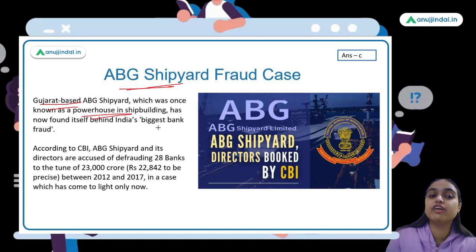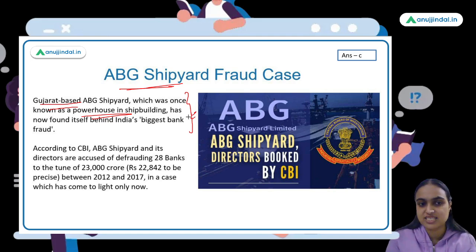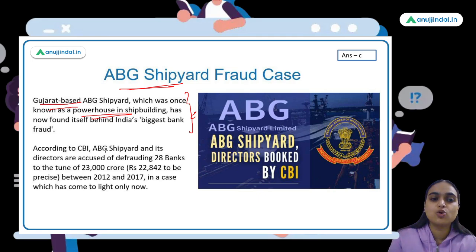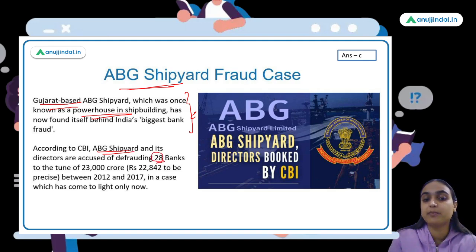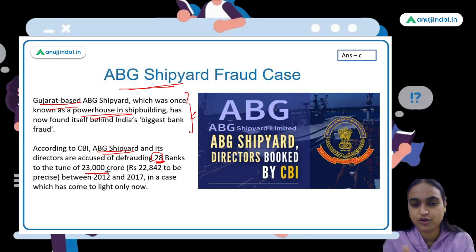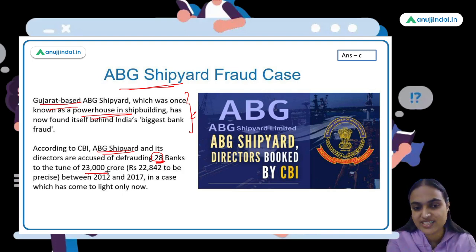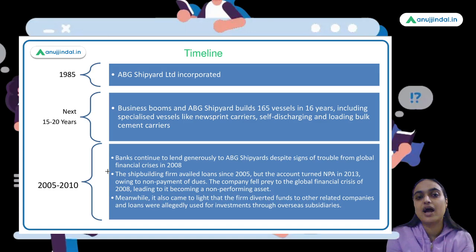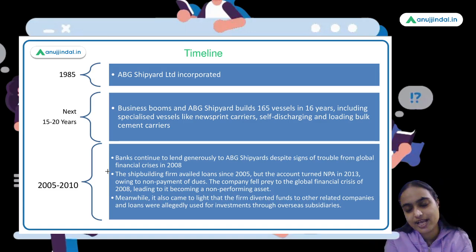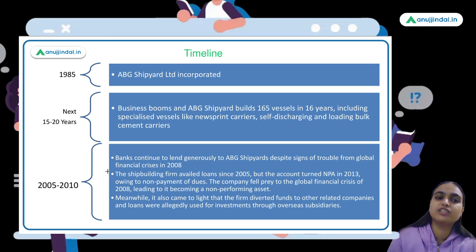The CBI has accused this firm of defrauding 28 banks for an amount of approximately 22,842 crores. This scandal occurred during the time period of 2012 to 2017 and has come to light now. Let's discuss the entire timeline of this company. The firm was incorporated in the year 1985.